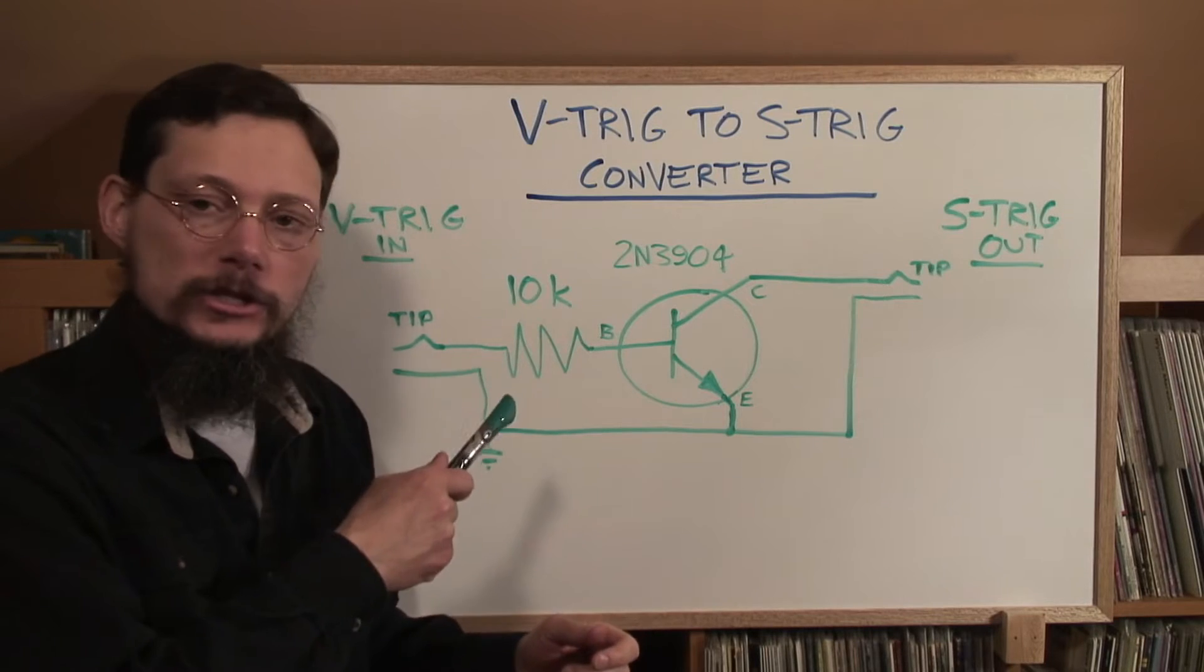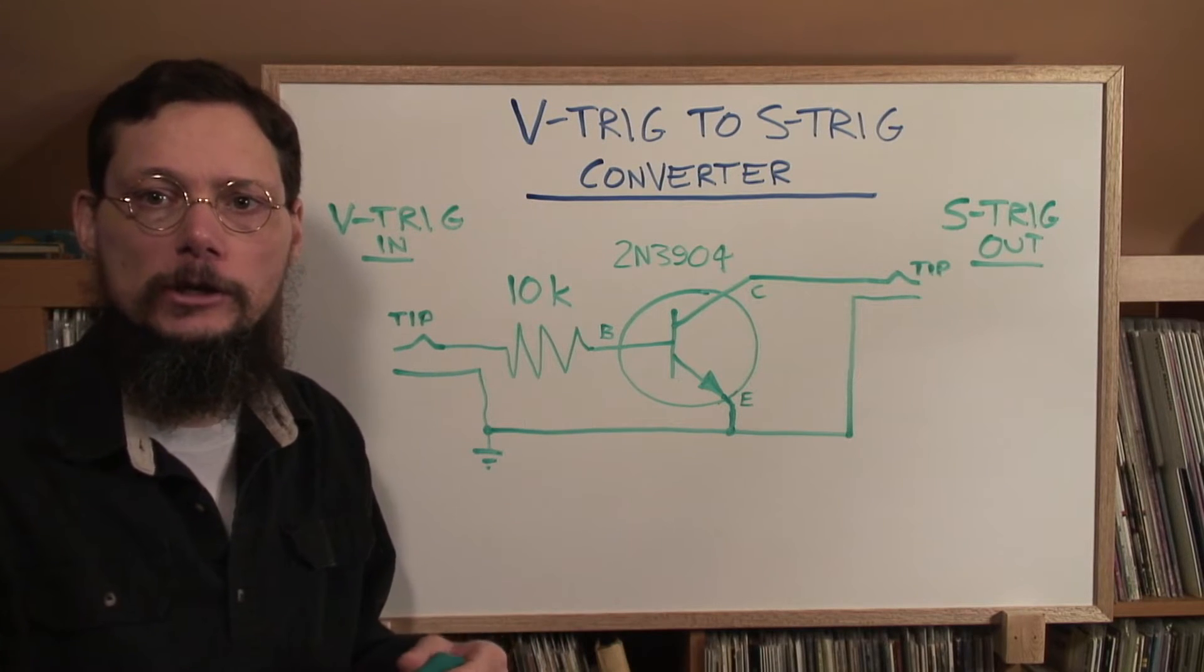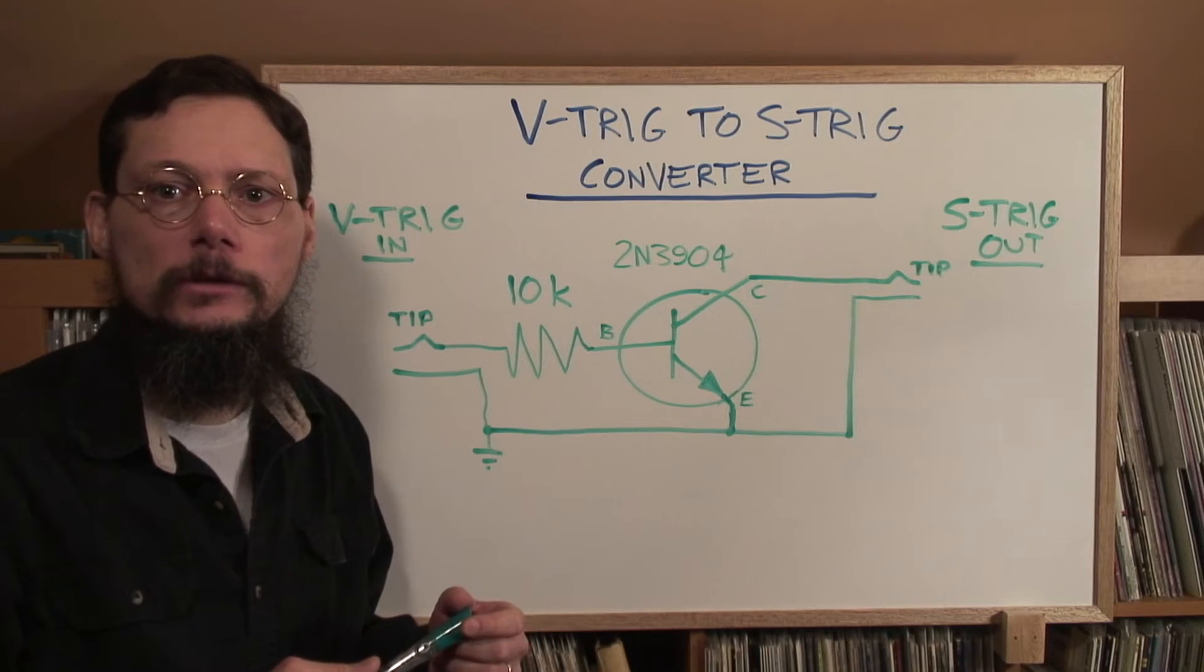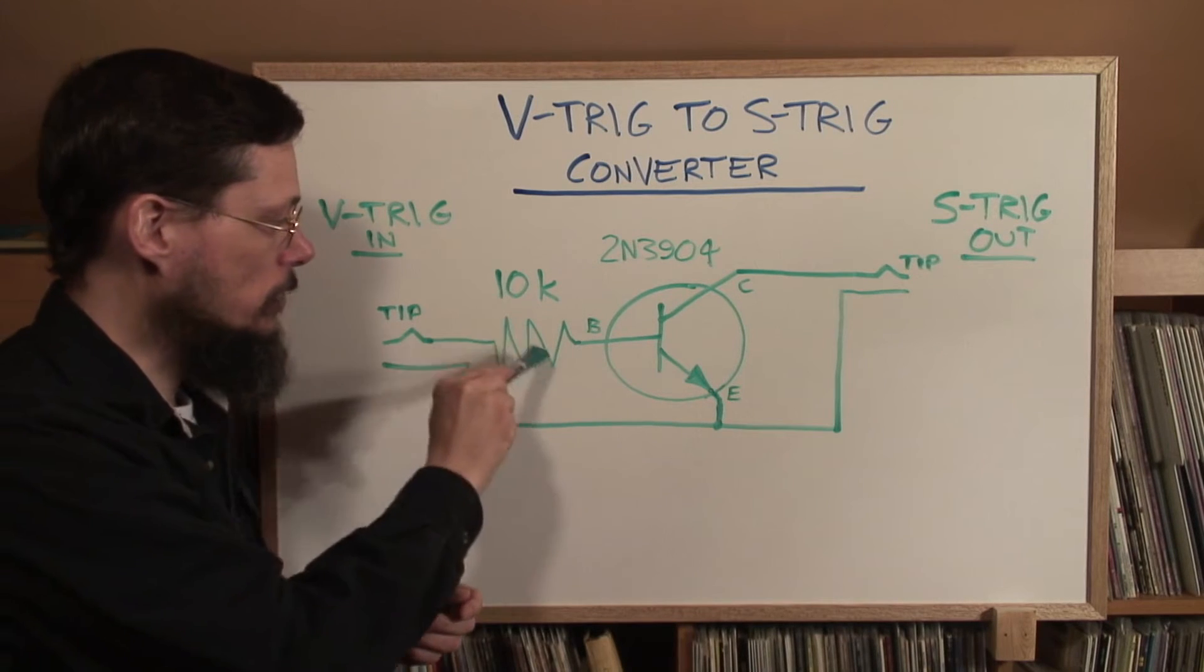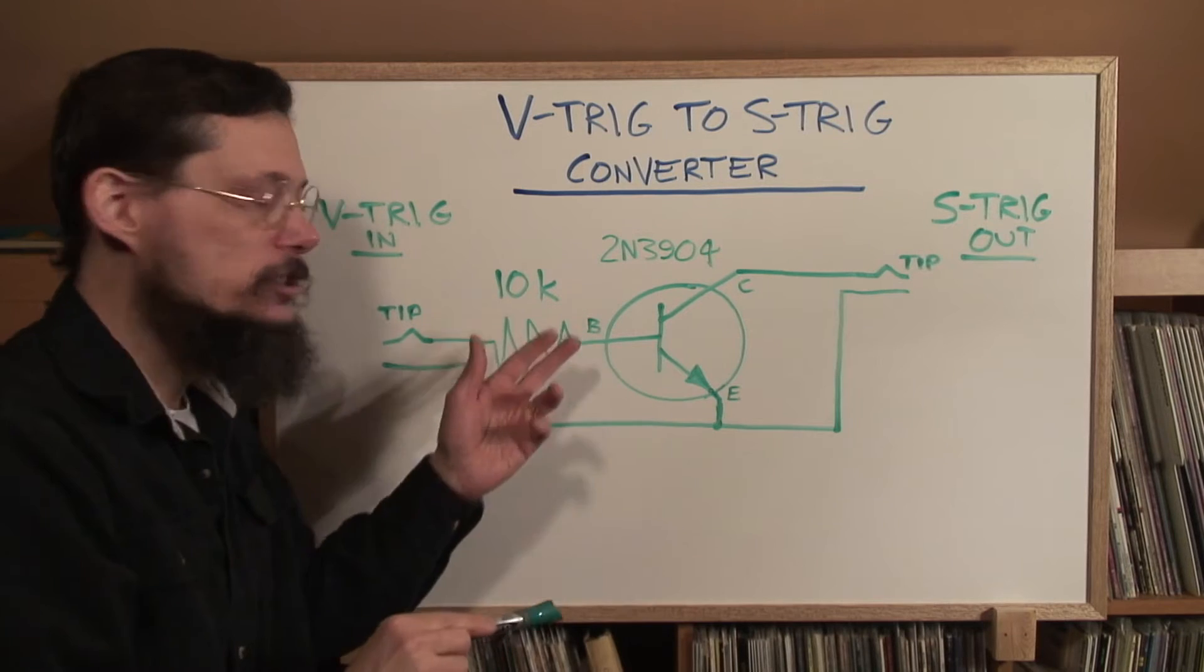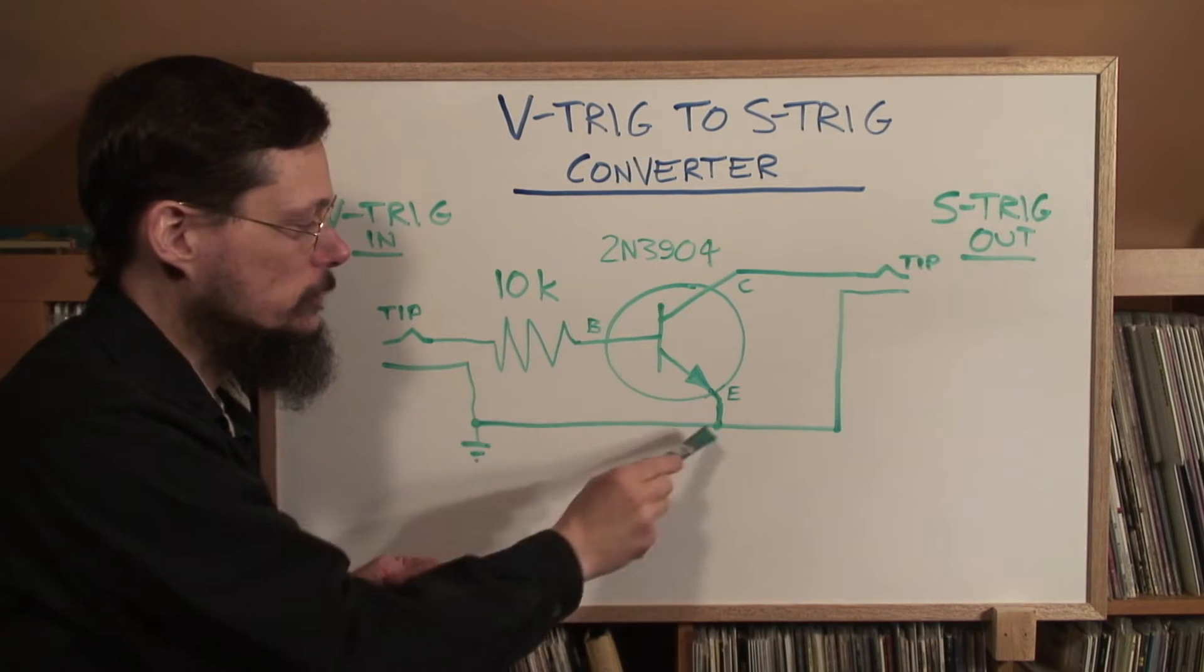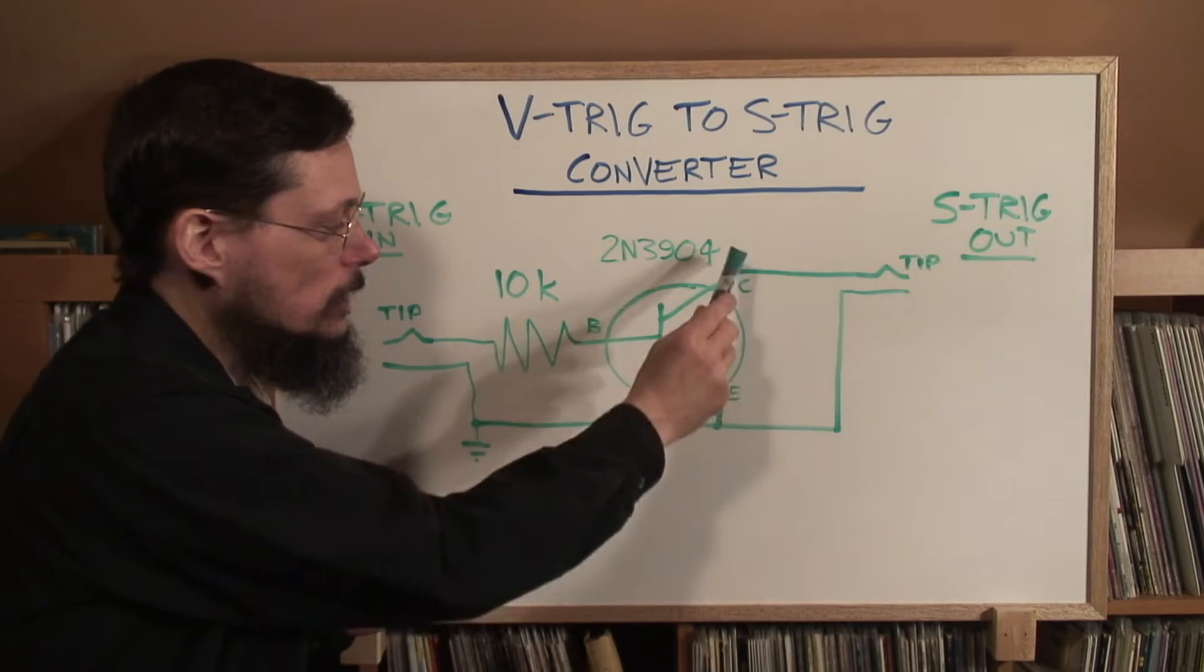This is the V-trig to S-trig converter circuit. If you're new to synthesizer electronics or you just want a really simple project to build, I would suggest understanding how this circuit works and building it into a cable. The theory is really easy and it's very simple to build. The V-trig signal comes in here on the left, on the line marked tip, and goes through this 10K resistor, which I'll get back to in a moment, and then on to the base of this transistor. It's just a 2N3904, it's a very common NPN signaling transistor. And that signal allows more than enough current to travel between the base and the emitter to completely saturate the transistor, which allows current to travel between the collector and the emitter.